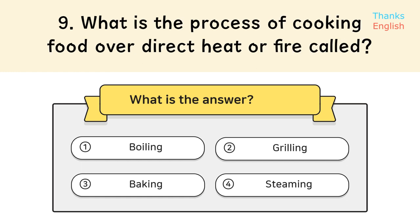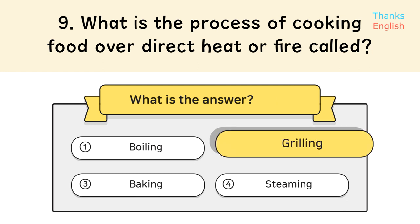Question 9: What is the process of cooking food over direct heat or fire called? Answer 2: Grilling.